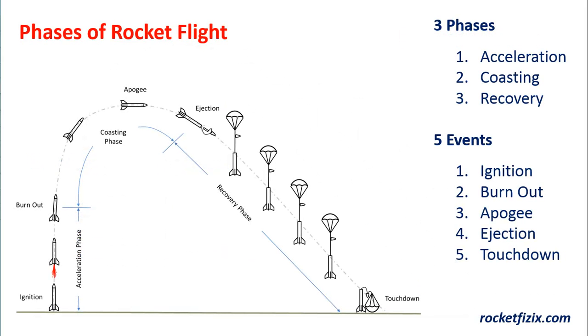When we combine everything together we get this summary diagram. It shows the three phases of flight: acceleration, coasting, and recovery. It also shows the five events that occur along the way: ignition, burnout, apogee, ejection, and touchdown.